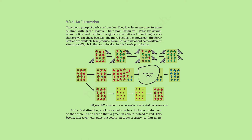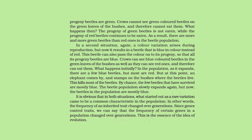In the first situation, a colour variation arises during reproduction so that there is one beetle that is green instead of red. This beetle can pass the colour onto its progeny so that all its progeny are green. Crows cannot see green-coloured beetles on the green leaves and therefore cannot eat them. The progeny of green beetles is not eaten, while the progeny of red beetles continues to be eaten. As a result, there are more and more green beetles than red ones in the beetle population.